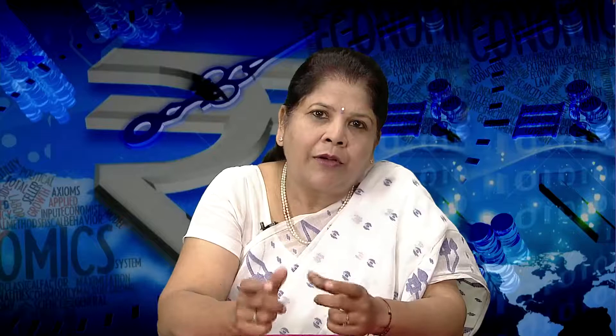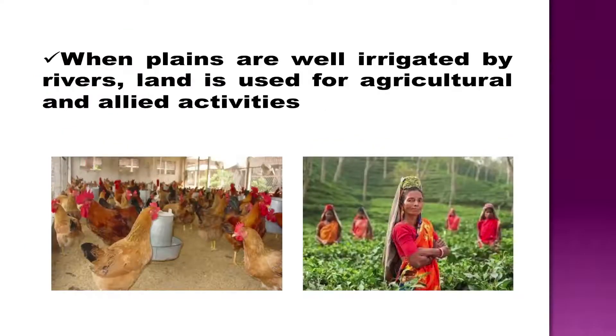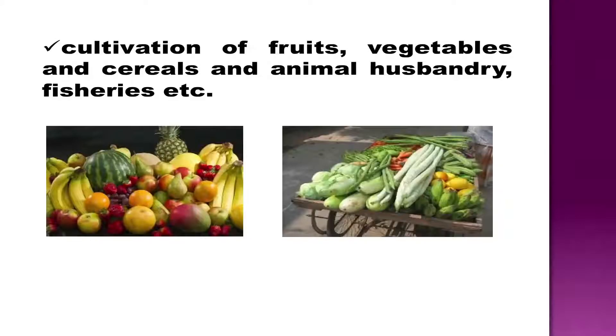Let us know more about these factors of production one by one. First and foremost is land. Land is a gift of nature. It includes plain regions, mountains and plateaus. The plain region is useful for agriculture and industrial activities. Mountains ensure flow of rivers into the plain region and provide facilities for cattle rearing and tourism. Plateau regions possess reserves of minerals, fossil fuels and forests. Production of food grains, vegetables, fruits, etc. require agricultural land in the plain regions.